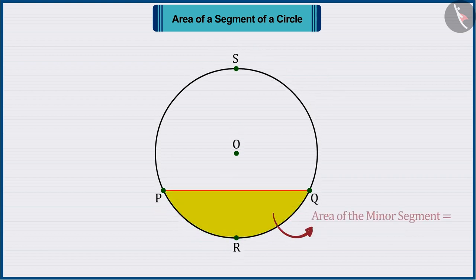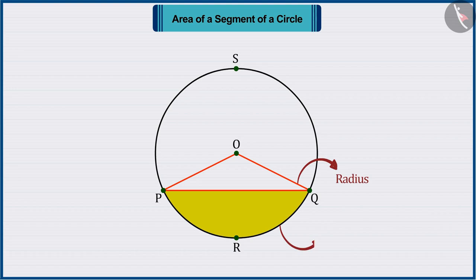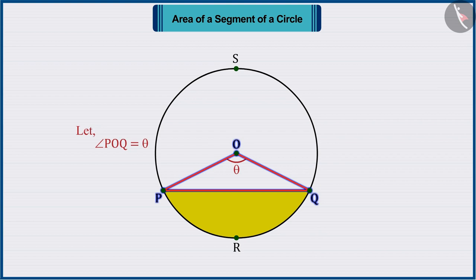Let's find the area of the minor segment PRQ. For this, from the center O to the chord PQ, draw radii OP and OQ, where the value of angle POQ is assumed to be theta.